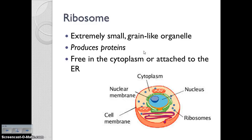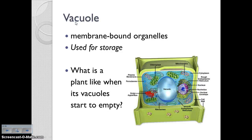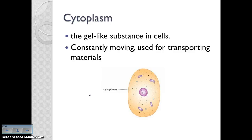Next up we have ribosomes — tiny organelles with a very important job: they produce proteins. Think 'rib' — when you eat a rib, you're getting lots of protein, so ribosomes produce proteins. They're either found free-floating in the cytoplasm or attached to the rough ER. Next we have the vacuole, which in plant cells is very large and used for storage — most of the time storing water. When a plant's vacuole is full, the plant looks happy and full; when it's empty, the plant looks wilted. Finally, the cytoplasm is the gel-like substance in cells that keeps everything in place.